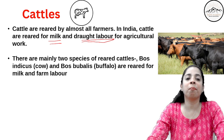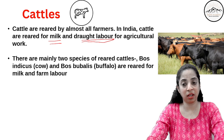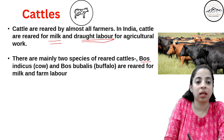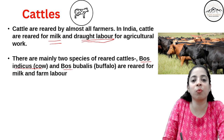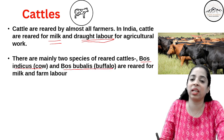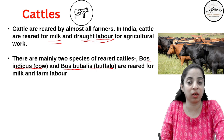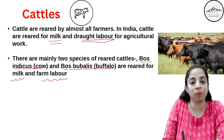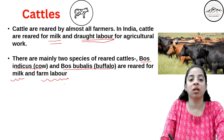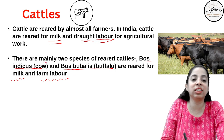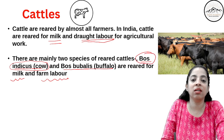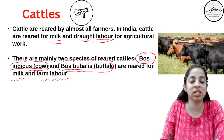There are mainly two species of reared cattles: Bos indicus, that is cow, and Bos bubalis, that is buffalo. Mainly cows and buffaloes are reared for milk and farm labour. Please remember these two scientific names — Bos indicus for cow and Bos bubalis for buffalo.